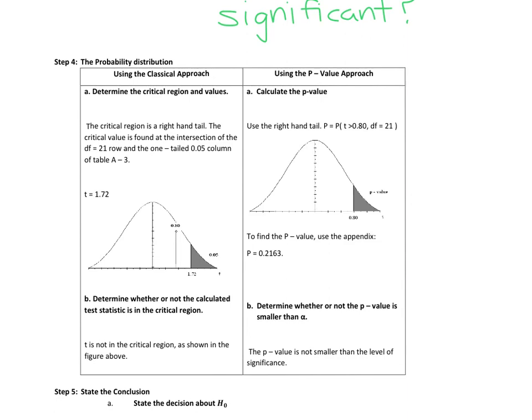So the classical approach is we focus on values. The critical region - first of all, the alternative hypothesis was greater than, so it's a right-tailed test. And that's what we have right here. The critical region is going to be in the right-hand tail because it's a right-tailed test.